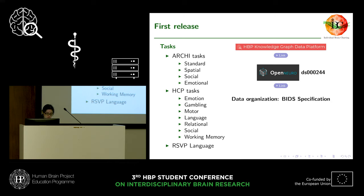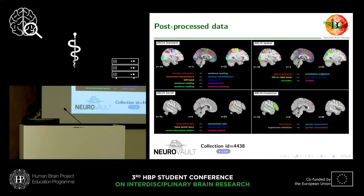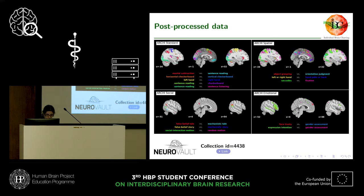In terms of data organization, we follow the BIDS specification. Everything about the first release is reported in our first data descriptor paper published in Scientific Data. In terms of post-processed data, here I display the binary statistical maps at the group level from the main contrasts grouped by tasks. This is a univariate approach; we correct for multiple comparisons using an FDR threshold of 0.05, although individual univariate maps are also available.